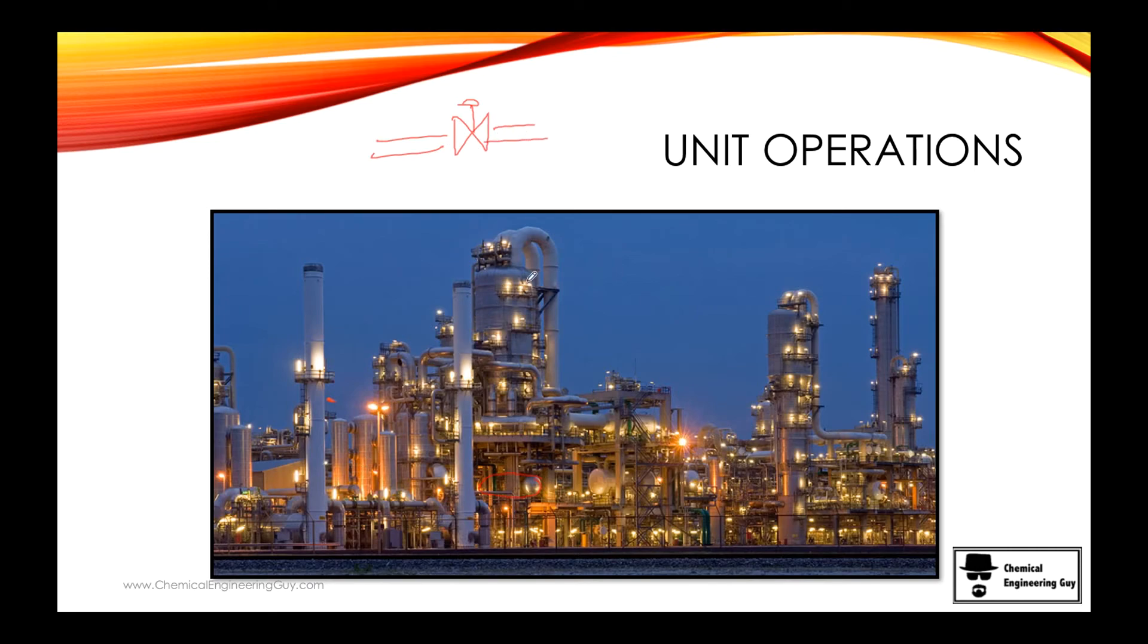This might be a cracking tower. You have some ducts, maybe these are distillation columns. This is definitely a distillation column maybe. And this one right here, you have a lot of pipes, ducts. You have one stage, two stages maybe. In order to move all these, you will have pumps and compressors. So you have plenty of unit operations that you will be working with in a chemical plant.